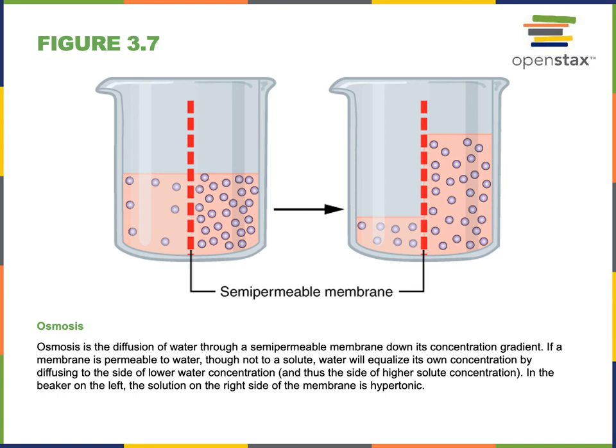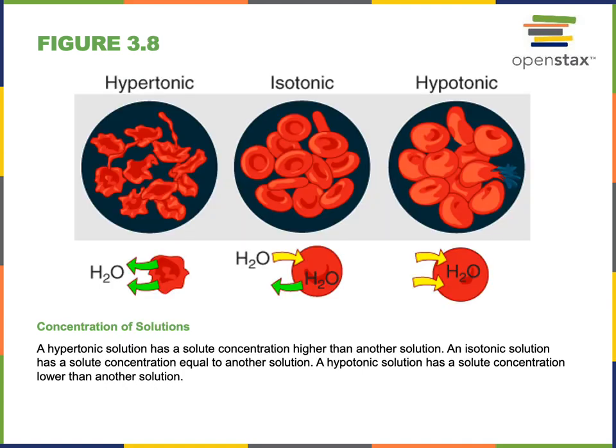Osmosis is the diffusion of water through a semi-permeable membrane down its concentration gradient. Tonicity is the ability of a solution to change the shape of a cell by altering its internal water volume. The tonicity of a solution depends on the concentration of non-penetrating solutes — that is, solutes that are not able to cross the plasma membrane will influence the tonicity of a solution.